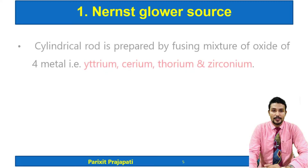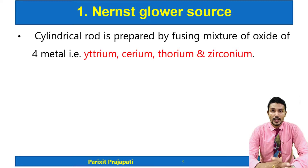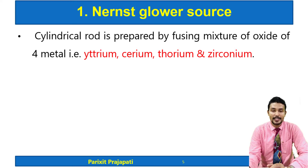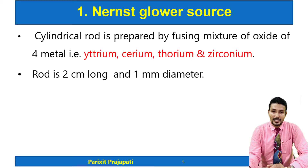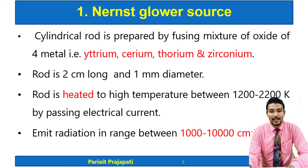The Nernst Glower source contains a cylindrical rod prepared by fusing a mixture of oxides of four metals: yttrium, cerium, thorium, and zirconium. The oxides of all four metals are made into a cylindrical rod of 2 centimeter length and 1 mm diameter. The rod is heated at high temperature between 1200 to 2200 Kelvin by passing electrical current, and it emits IR radiation between 1000 to 10,000 reciprocal centimeters.